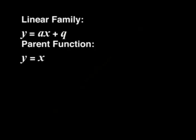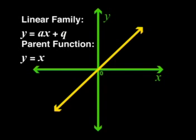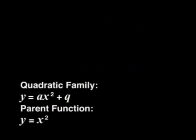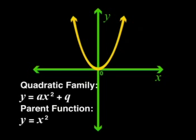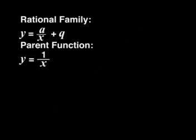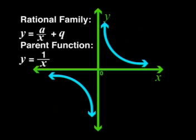In previous lessons we looked at each of the three different families of functions and we decided to define their parent functions first. Linear functions have a formula of the form y equals ax plus q. The parent function of the linear family is y equals x, and its parent graph is a straight line. Quadratic functions have a formula of the form y equals ax squared plus q. The parent function is y equals x squared, and its parent graph is a parabola. For the hyperbolic function family, the parent function is y equals 1 divided by x.